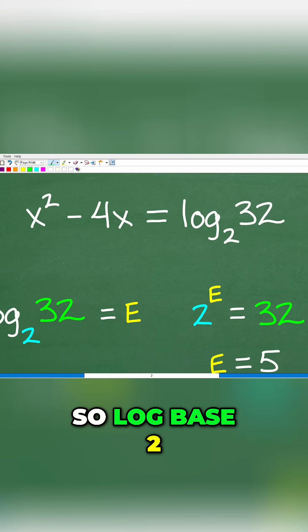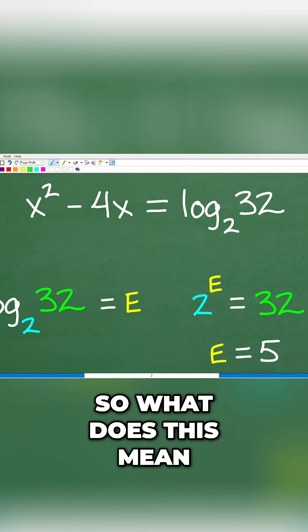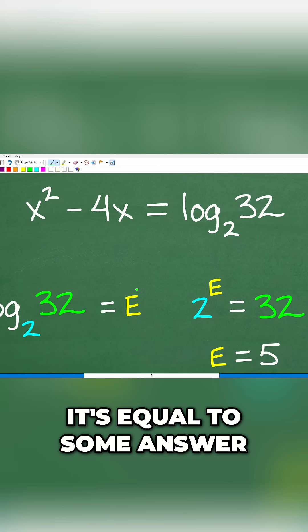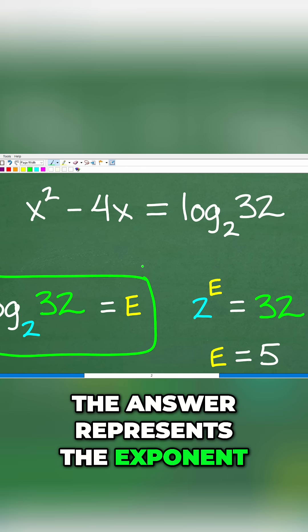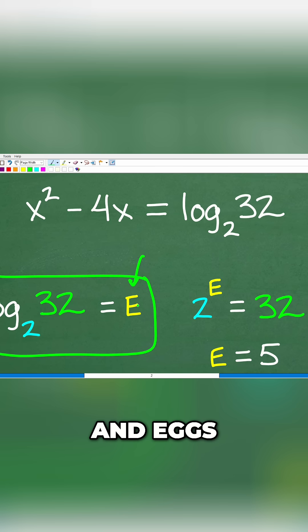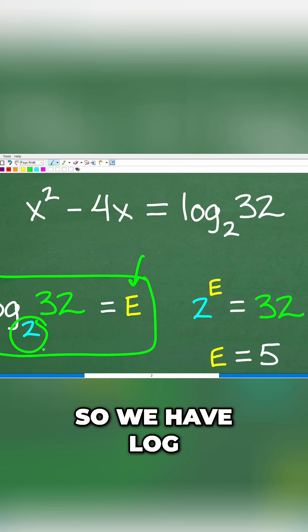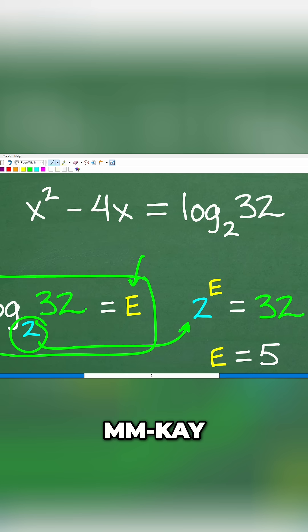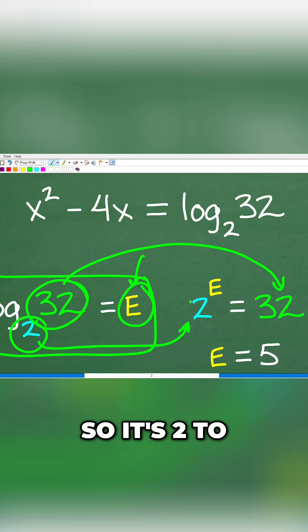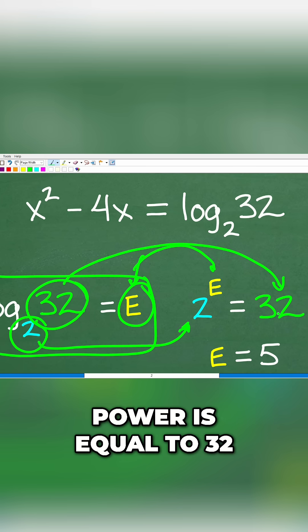So, log base 2 of 32 — what does this mean? Well, log base 2 of 32 is equal to what? It's equal to some answer. The answer represents the exponent, right? So remember, we're talking about bacon and eggs. So let's rewrite this. We have log base 2, so we have a base of 2. The answer is 32, and that gives us 2 to some exponent, right?